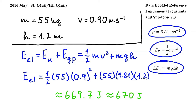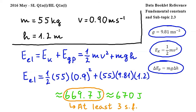Please note that since this is a 'show that' question, you should round the answer that you get from your calculations to at least one more significant figure than the 'show that' answer given in the question. Since 670 is rounded to two significant figures, here I should round to at least three significant figures. Since in this question the three significant figure answer looks the same as the two significant figure answer, I decided to round to four significant figures.